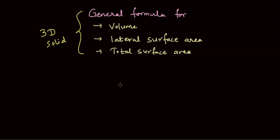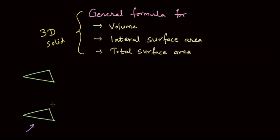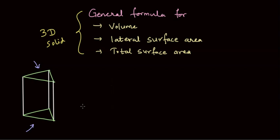We will consider a general 3D solid. What we usually have when we have a solid is a bottom surface area, and if we pull it upwards, more matter is created and the solid is formed. So there is a top surface area and a bottom surface area which are equal, and then there is a third dimension — the height of this solid — giving us a 3D solid.